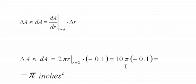And this, of course, you can see, equals 10 pi times negative 0.1, and that finally equals negative pi square inches, or about negative 3.14 square inches.